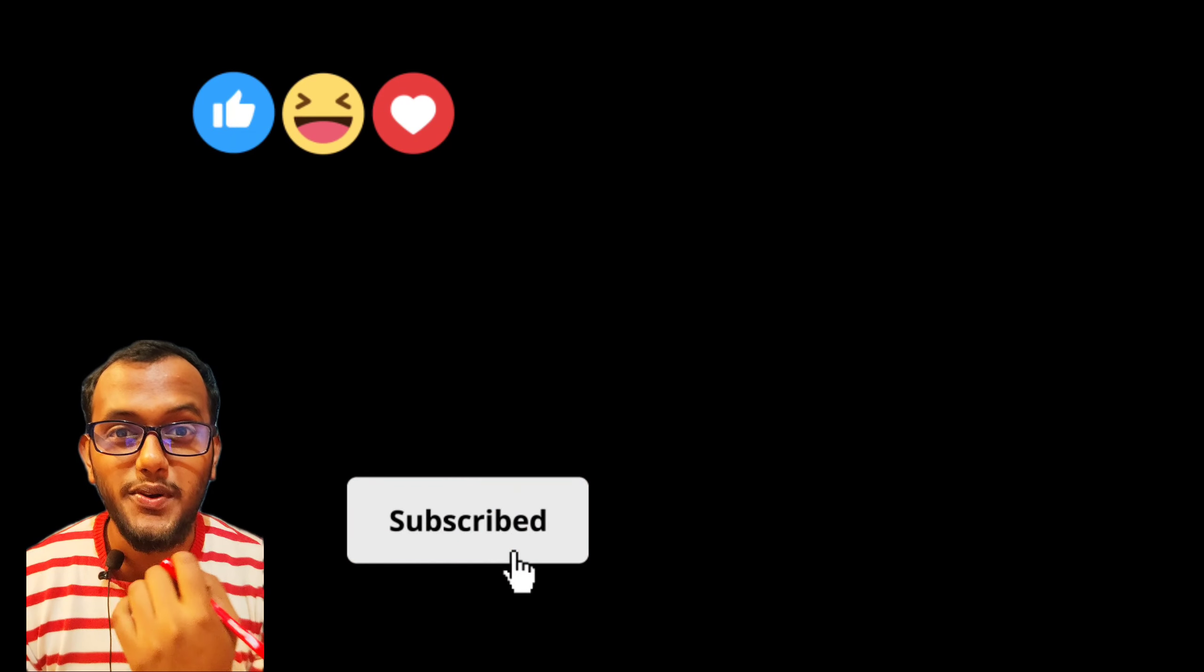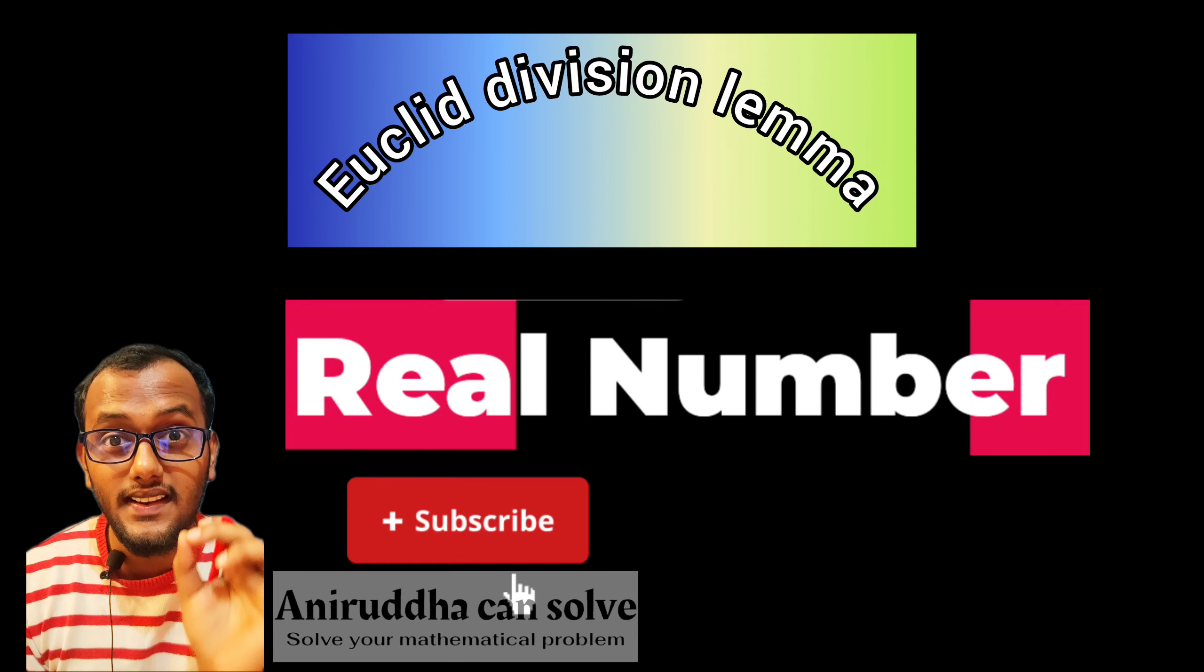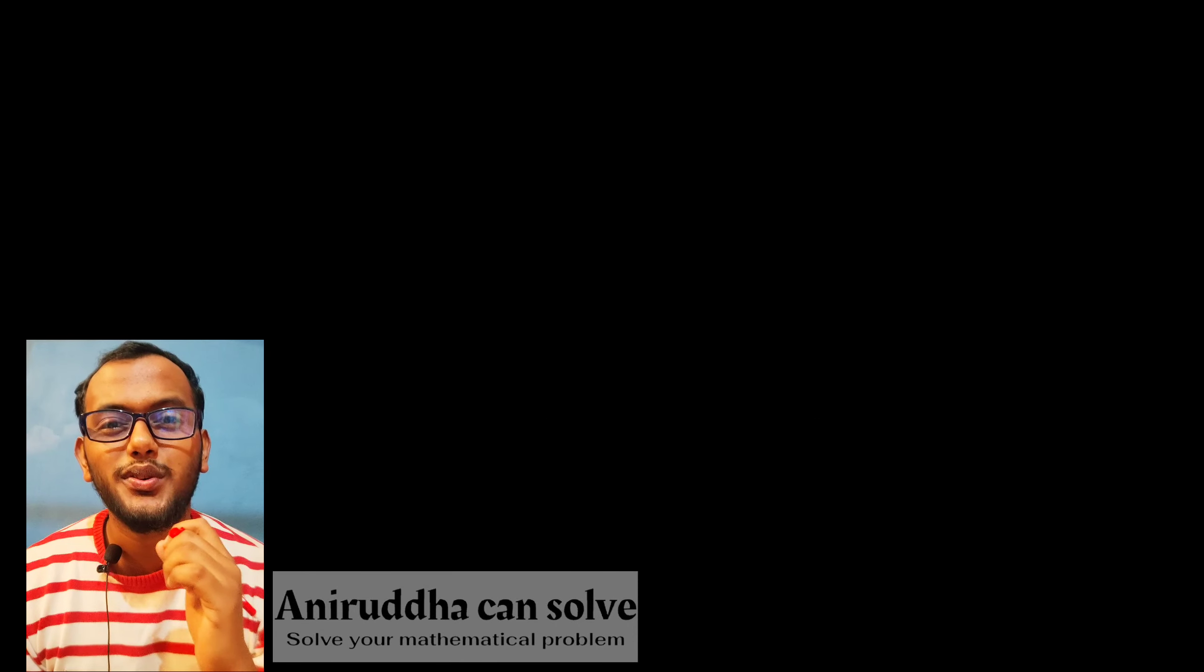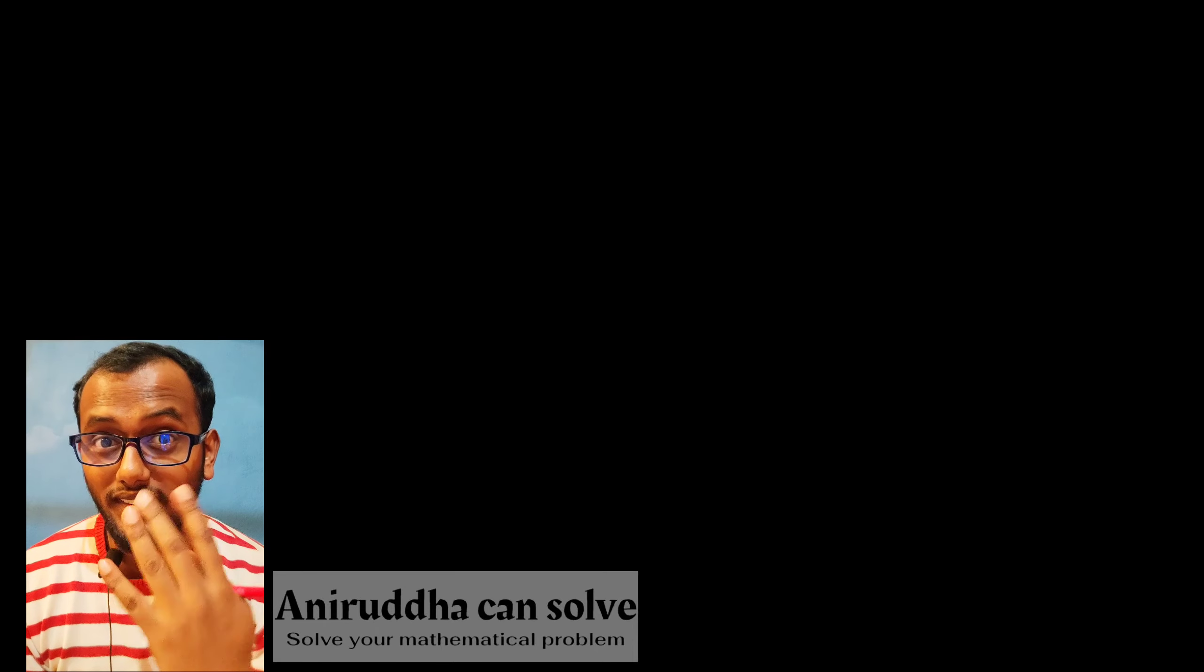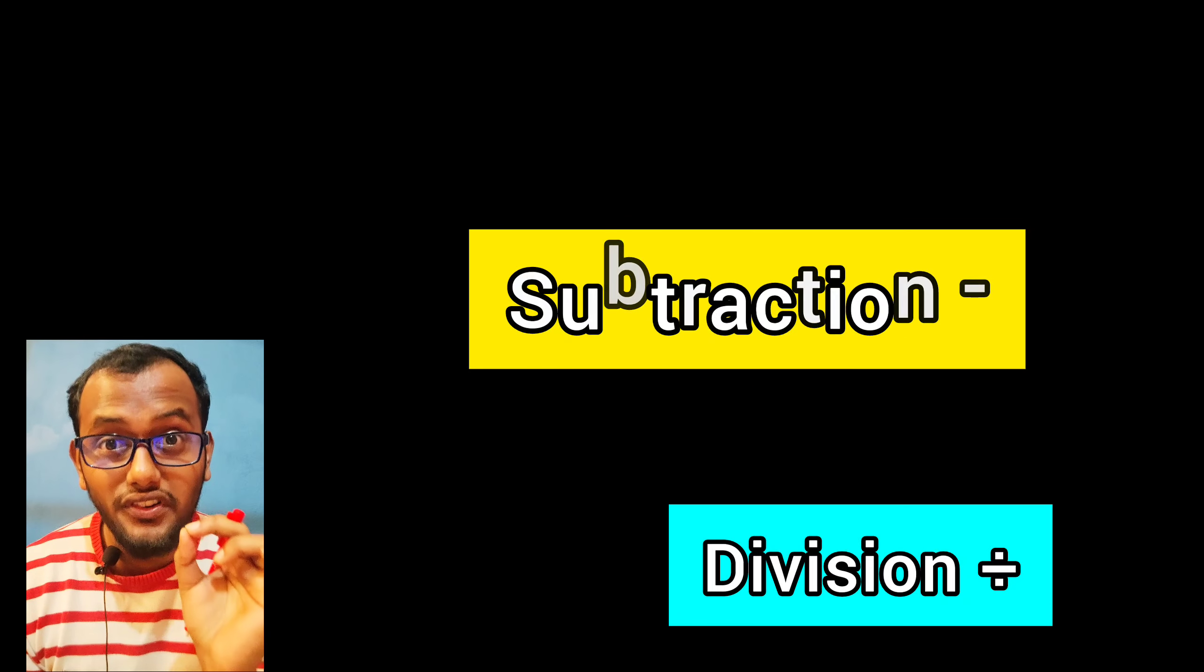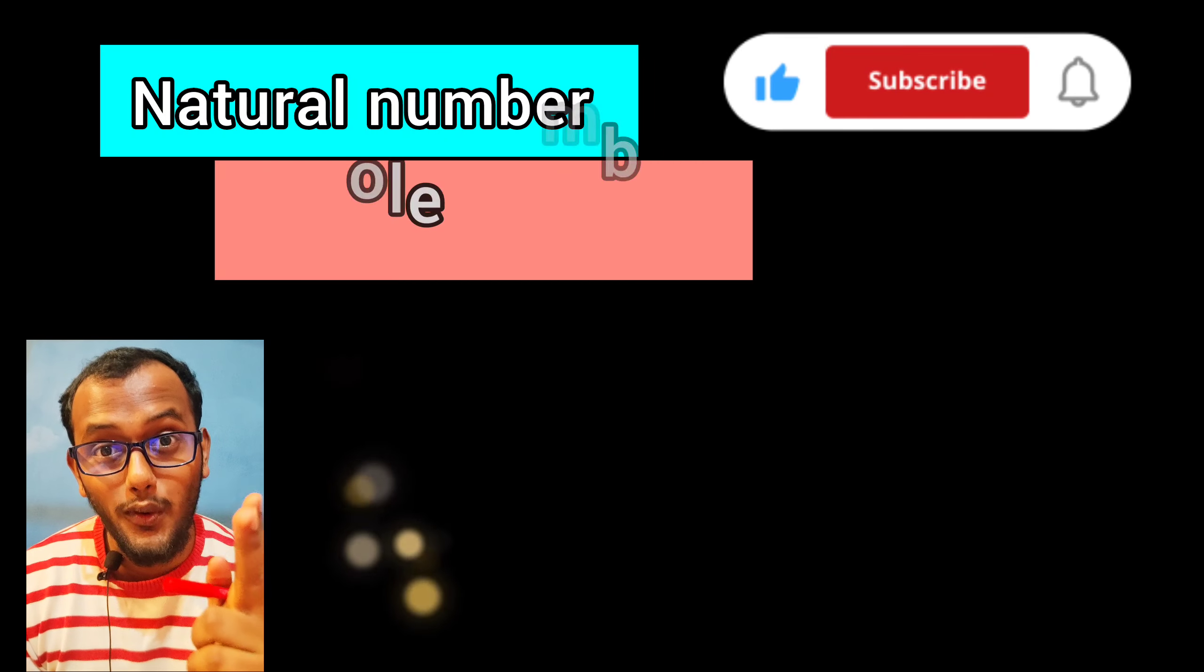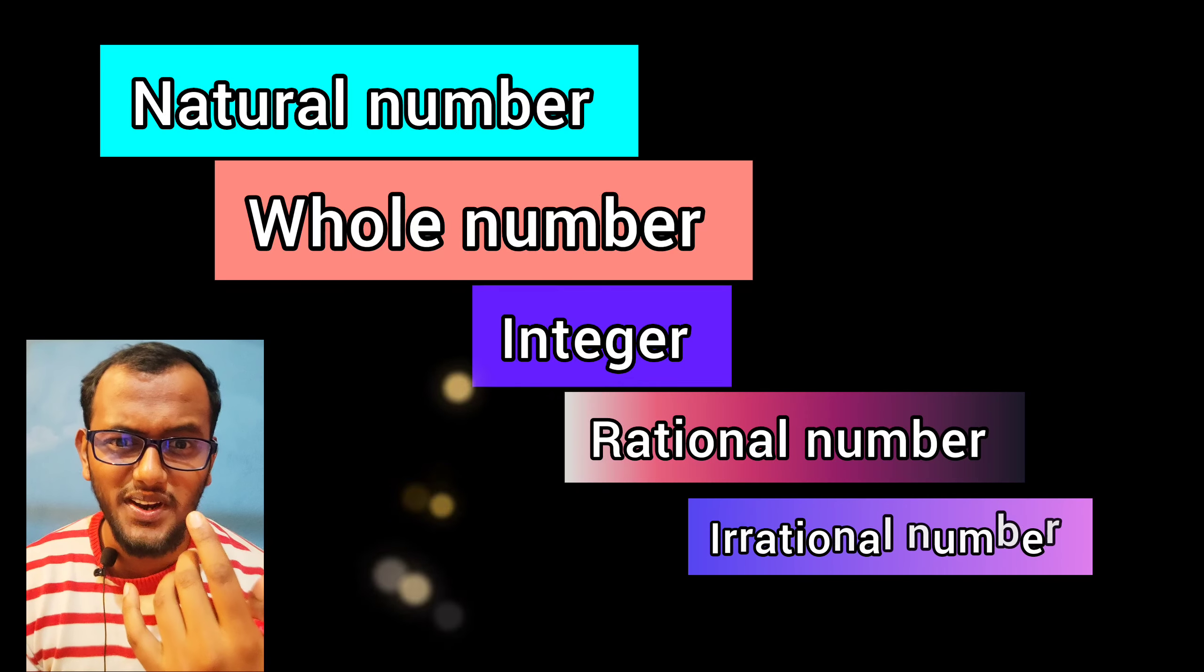Hello everyone. In this lecture we are going to talk about real numbers and especially Euclid's Division Lemma. From childhood we have been using four operations: addition, subtraction, multiplication, and division. We apply these operations on natural numbers, whole numbers, integers, rational numbers, and irrational numbers.